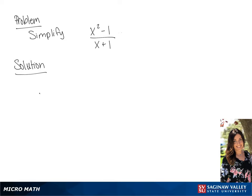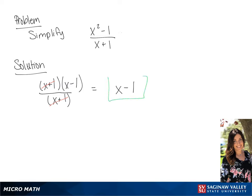We are going to simplify x squared minus 1 over x plus 1. So x squared minus 1 is x plus 1 times x minus 1. We can cancel the x plus 1 from both the numerator and the denominator, and we get a final answer of x minus 1.